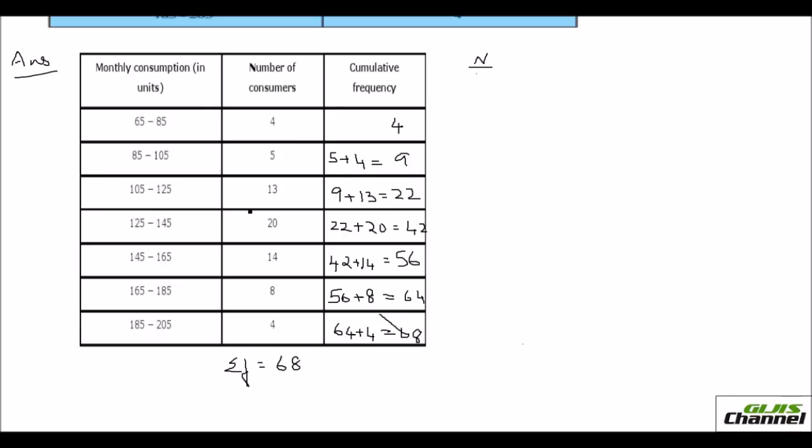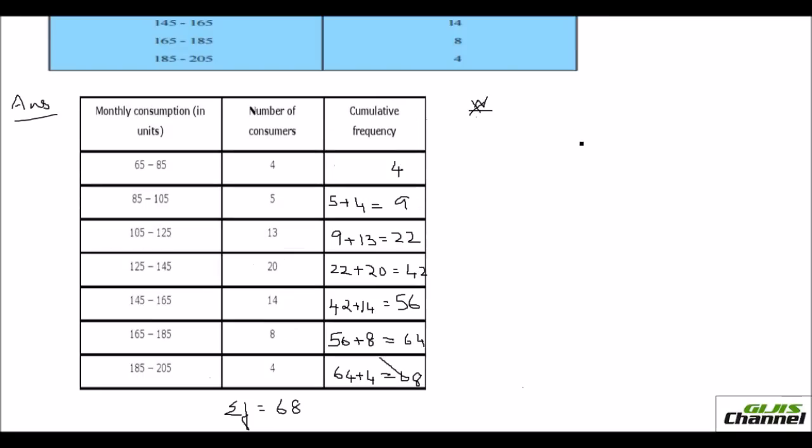See this is different method where you add the formula. The formula for this is the median would be L plus n over 2, this is capital N, capital N over 2 minus the cumulative frequency whole divided by the frequency, times H. First I am going to find out n over 2.